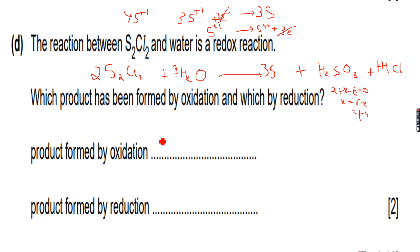Therefore, H2SO3 has been formed by oxidation. H2SO3 has been formed by oxidation. And when we went from S plus one to S, the oxidation number decreased.